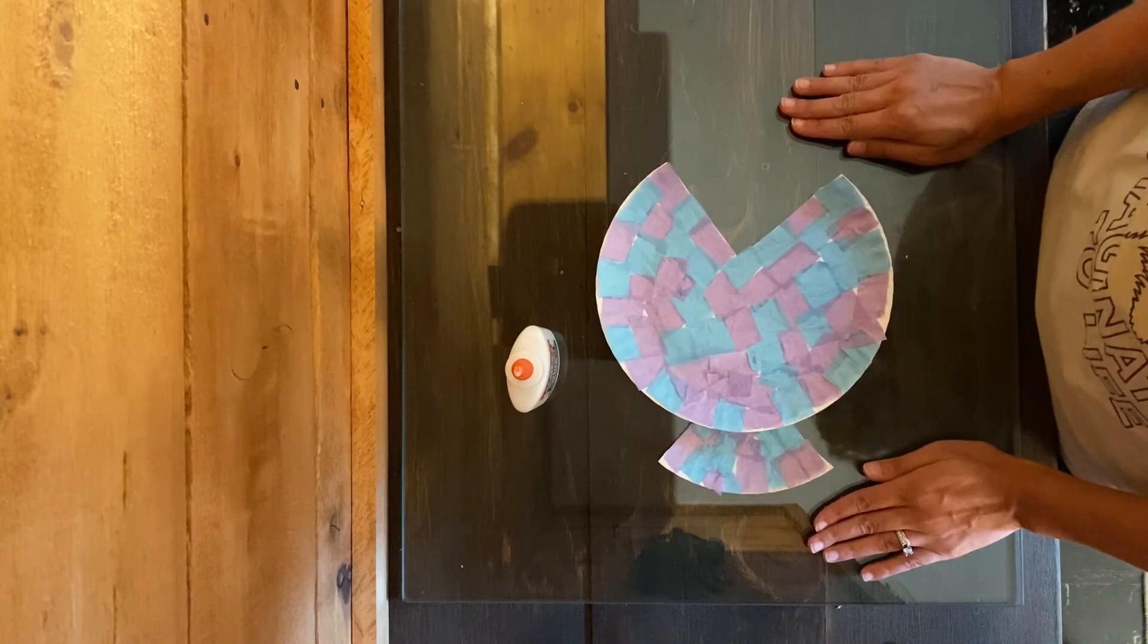Next, I'm going to glue on the googly eye. If you don't have a googly eye, you can make one out of construction paper.